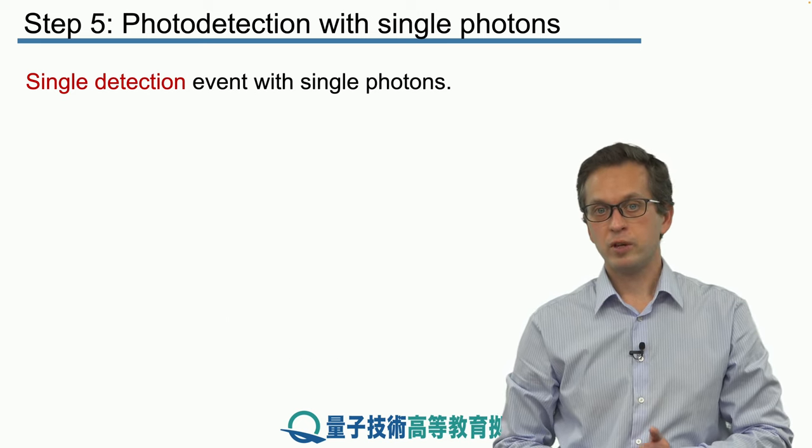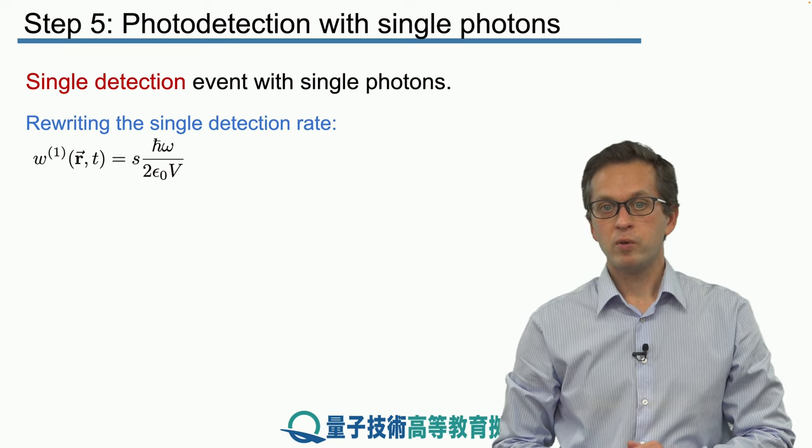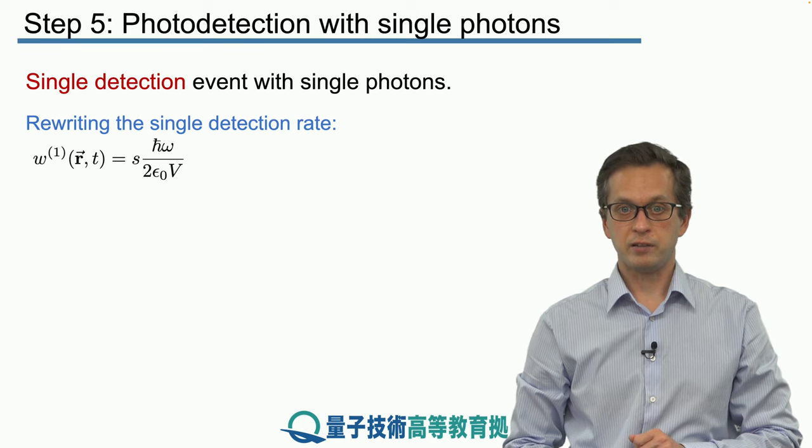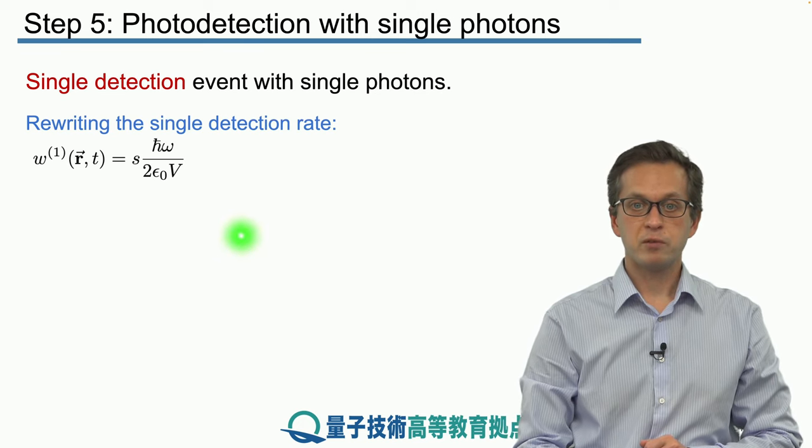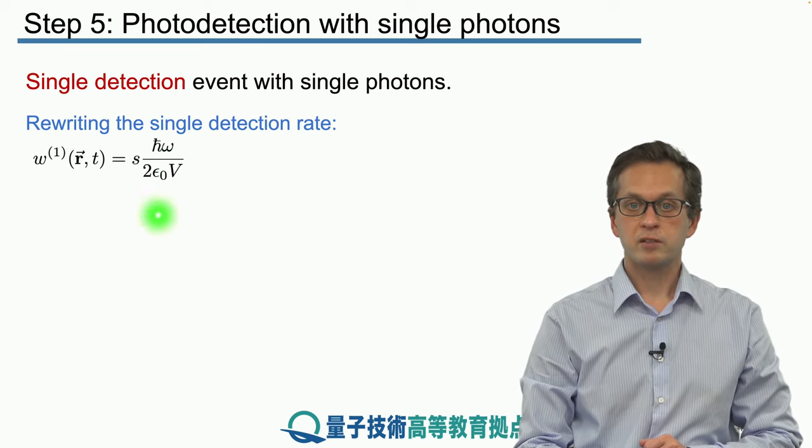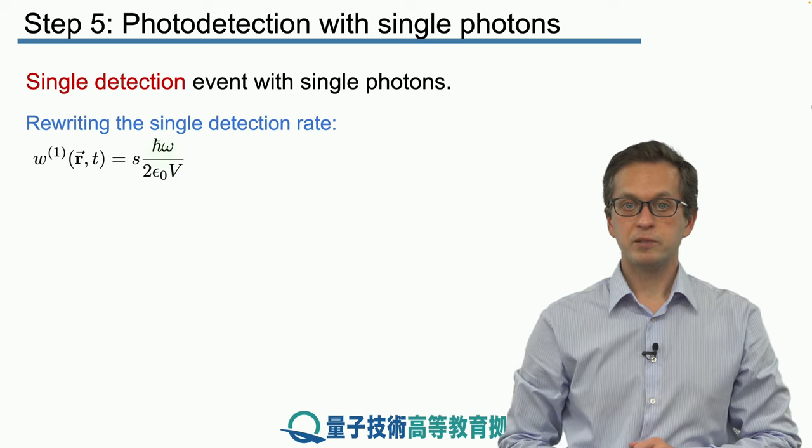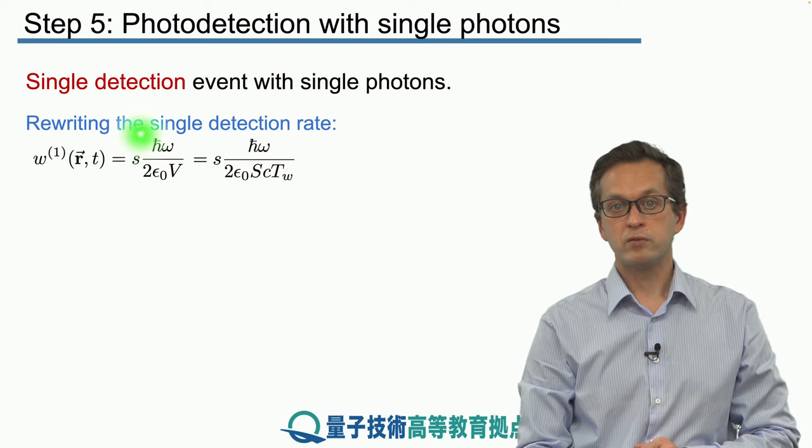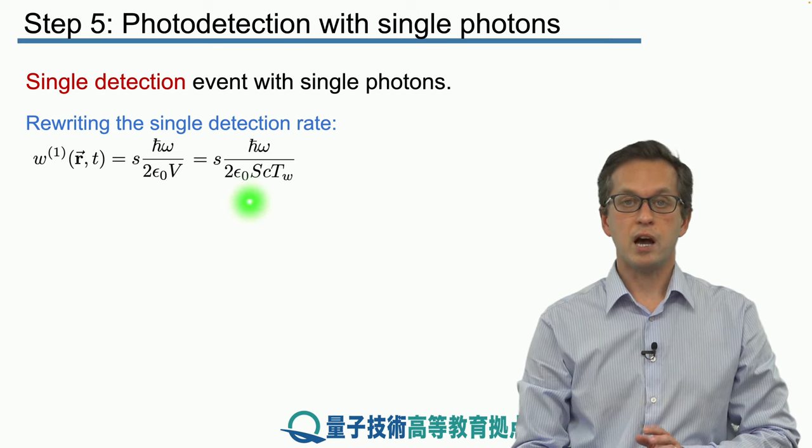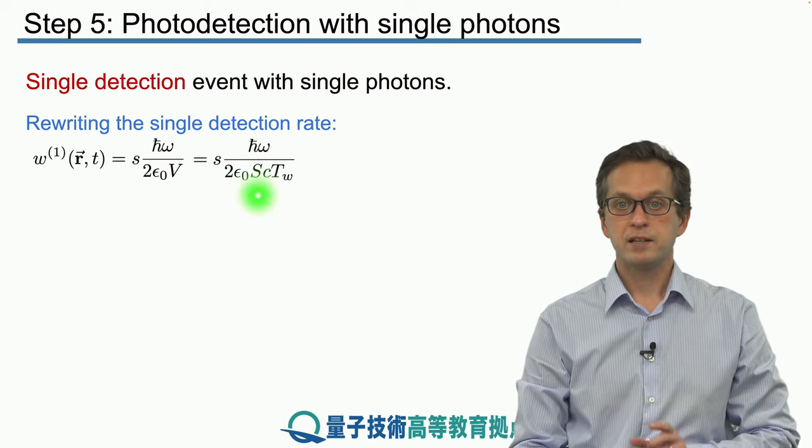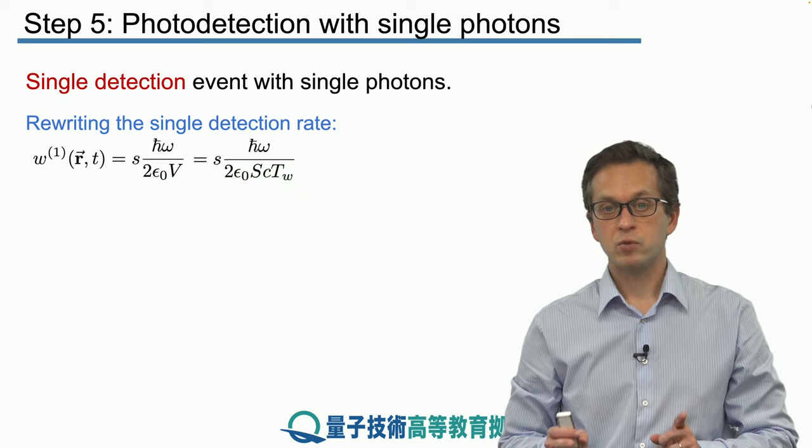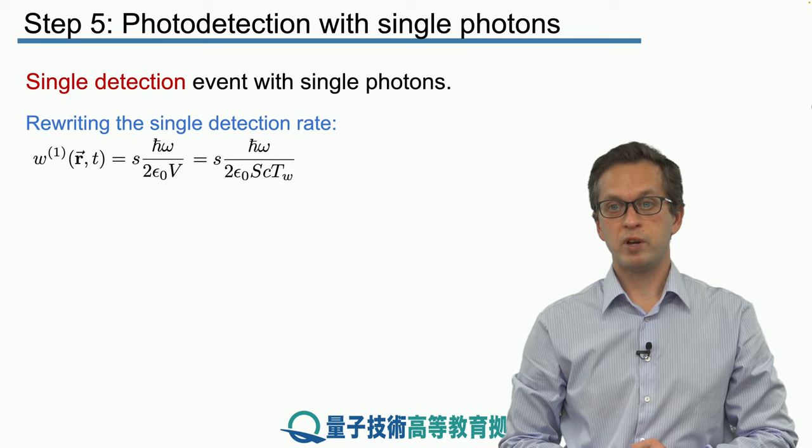So knowing w1, we want to rewrite it a little bit and ask what's the total probability of getting a click in our detector. So we are going to substitute for E1 squared and obtain this expression. And also we said that the quantization volume V is equal in our top hat model as s, the width of the beam, times c times the tw, which is the time duration of our wave packet.